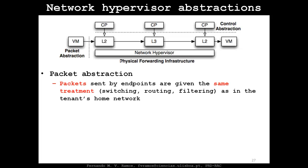The second abstraction is the packet abstraction. Packets sent by endpoints receive the same treatment — switching, routing, ACL filtering, etc. — as they would in the tenant's home network. It's complete full virtualization: your packets experience exactly what they would in a real network, but everything is done at the source hypervisor.